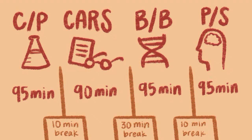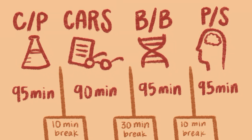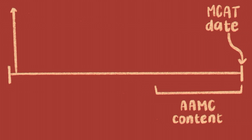First, you're going to want to familiarize yourself with what the MCAT is, what's on it, what the sections are, and how much time you have for each section. Then you're going to want to work backwards from your test date. Whatever test date you picked, however many months you have out, make sure you block off the last month of studying for just AAMC content.